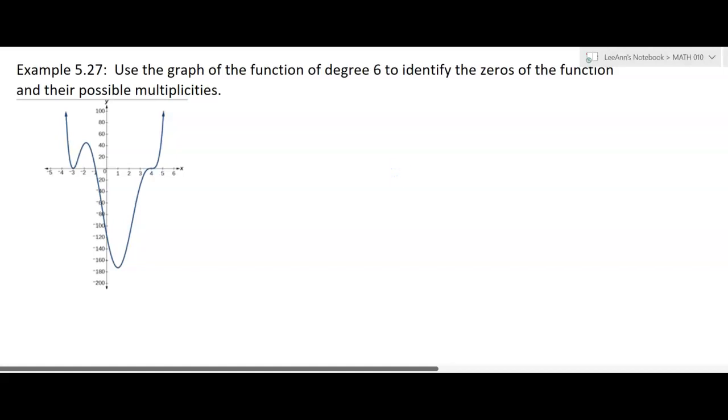So now they want us to go a little bit different. They're going to give us the graph, and we're supposed to come up with the zeros and their possible multiplicities. We don't have to write the equation. It's a degree 6. So we see there's a zero at negative 3, and that's going to have an even multiplicity.